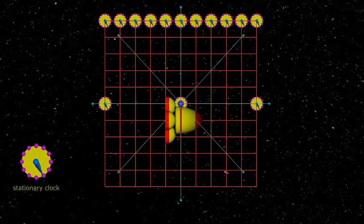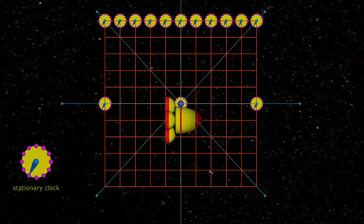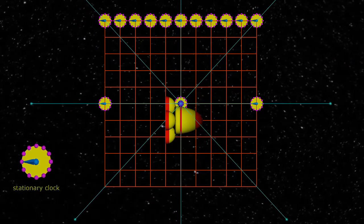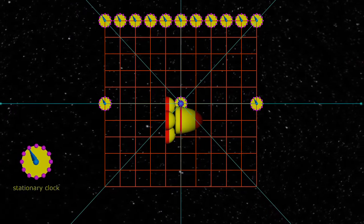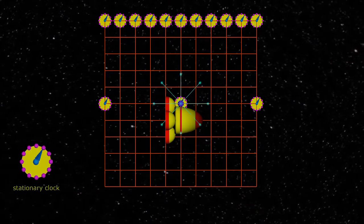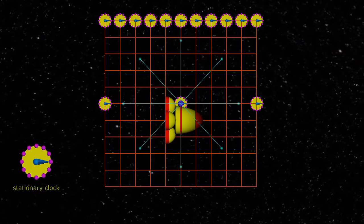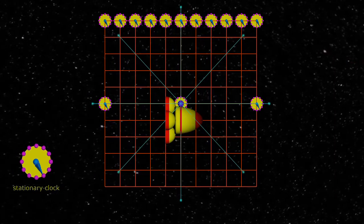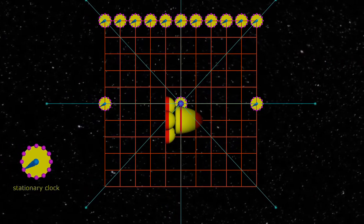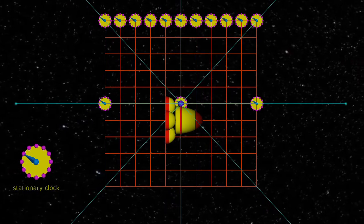The photons are emitted when the hand on the central clock is up. As the photons move through the grid, each photon passes a series of intersections in the grid. The grid measures space and the clocks time. Together they can be used to measure events, moments in space and time.